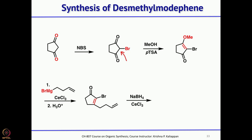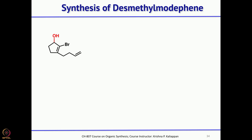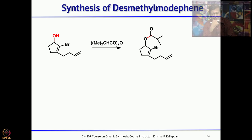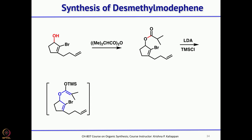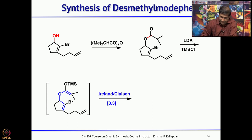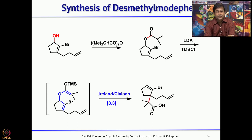The enone was reduced with sodium borohydride and cerium chloride under Luche reduction conditions to give the corresponding allylic alcohol. Treatment with isobutyric anhydride forms the corresponding ester. The idea was to carry out an intramolecular Ireland-Claisen rearrangement: treatment with LDA and TMS chloride generates the enol TMS in situ, followed by Ireland-Claisen rearrangement to give the carboxylic acid.